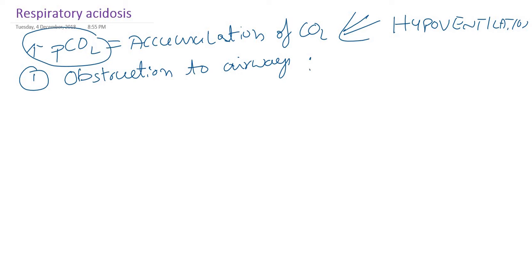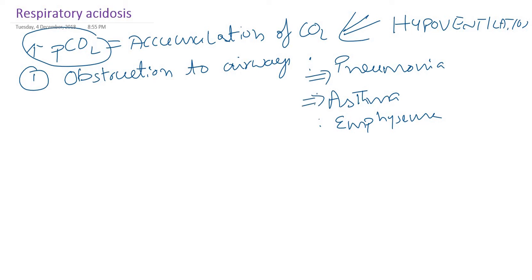What are the conditions where there is obstruction to the airways or respiratory passage? This could be due to pneumonia, where there is obstruction to the airways. Accumulation of carbon dioxide is converted to carbonic acid, causing respiratory acidosis. Bronchial asthma is another cause. Also, chronic obstructive pulmonary disease, called COPD. All these conditions lead to accumulation of carbon dioxide due to obstruction of the air passage.